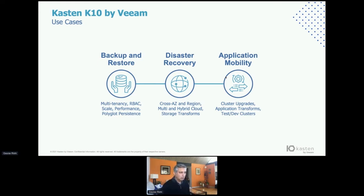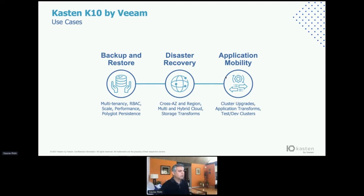Disaster recovery is the second use case. People make errors, disasters strike, and ransomware makes it all the more important today. We do DR really well in the context of regions, availability zones, and hybrid architectures. Because not every deployment is the same, you might need to restore your application where the storage class has changed—say, spinning media to SSD. Kasten has the ability to handle these transformations, which is a really important and powerful feature.